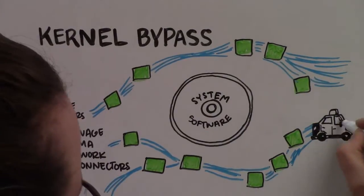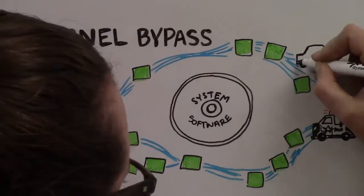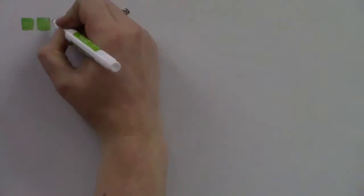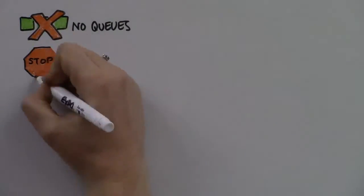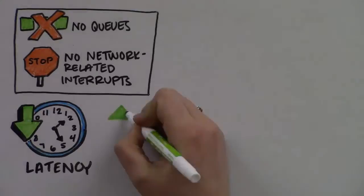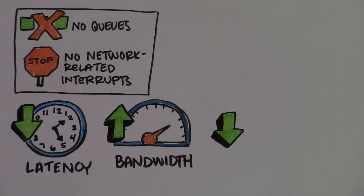Via queue pairs, iWARP bypasses the host processor and transmits packets of data directly to the application's user space. No queues for the processor to manage or network-related interrupts to handle. The result is lower latency, greater bandwidth, and lower CPU utilization.